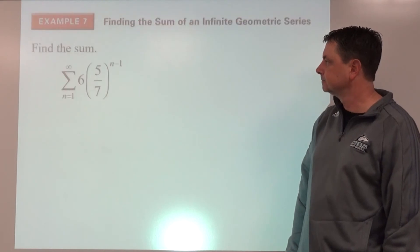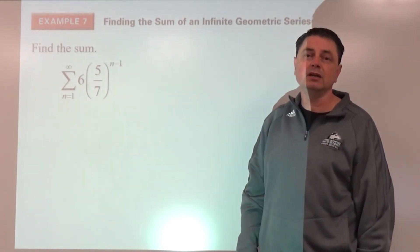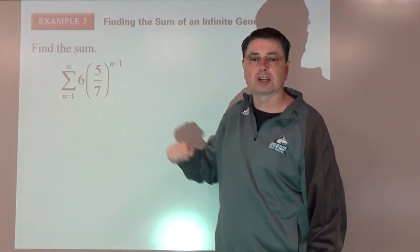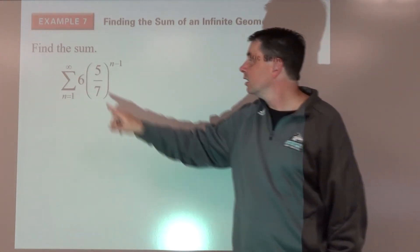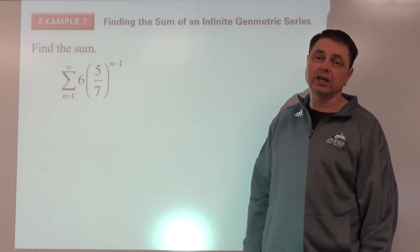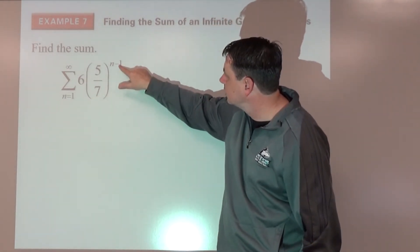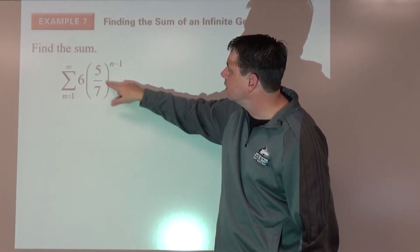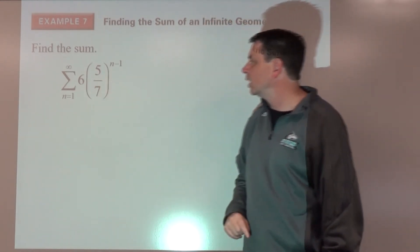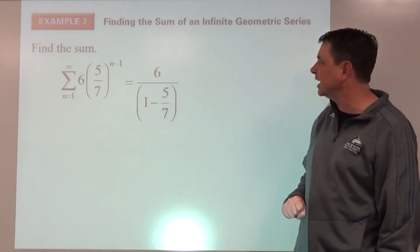Find the sum of an infinite geometric series — indicated by the infinity symbol as the upper limit in sigma notation. We know it's geometric because it's exponential, and since the absolute value of r is less than 1, a sum exists. Substitute n equals 1 to get a-sub-1: five-sevenths to the zero is 1, times 6 is 6. So: 6 divided by one minus five-sevenths equals 6 divided by two-sevenths.